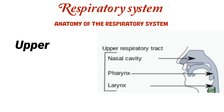The upper respiratory tract includes the nose, the nasal cavity, the pharynx, and the larynx. Air enters through the nostrils and passes into the nasal cavity where it is warmed, filtered, and humidified. Tiny hairs called cilia and a layer of mucus trap dust, pathogens, and other particles, preventing them from reaching the lungs.